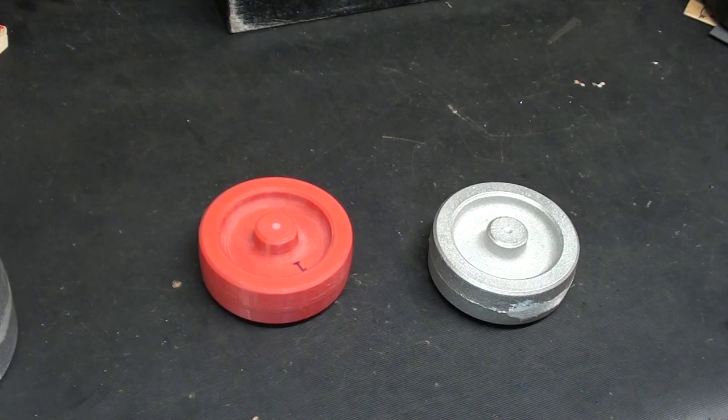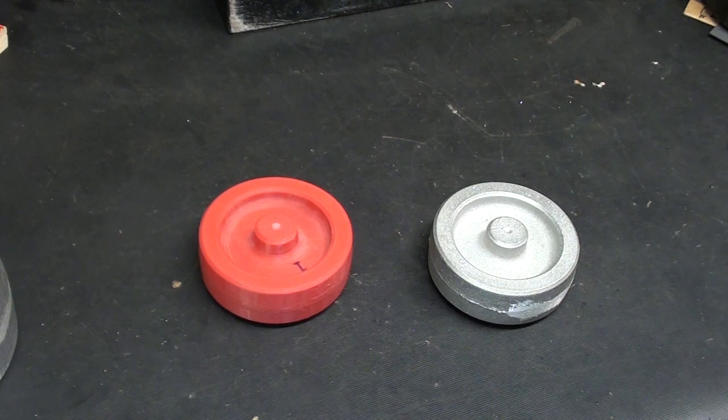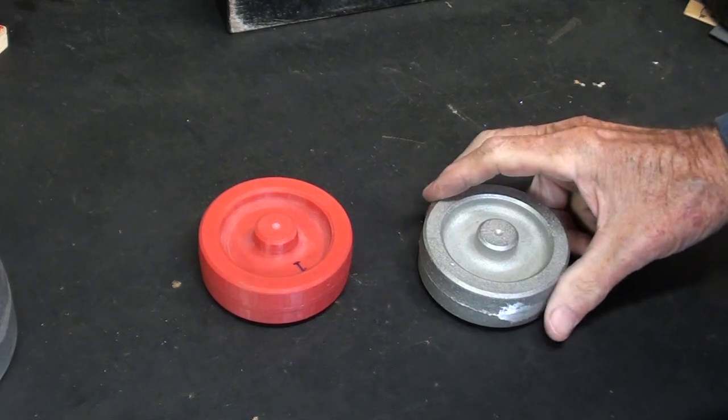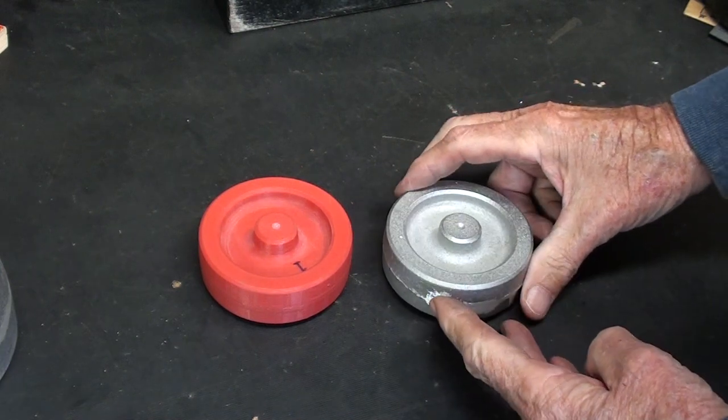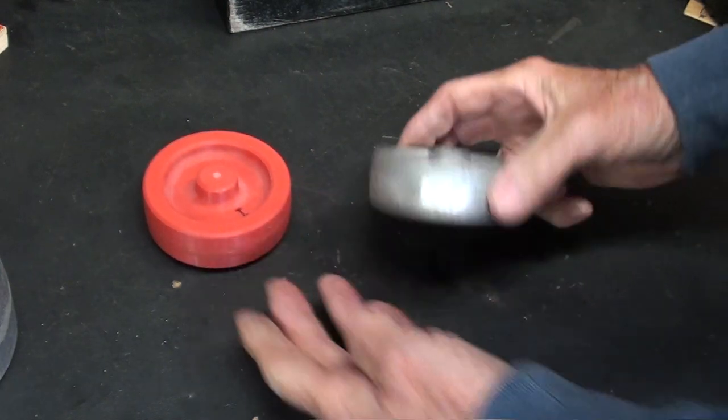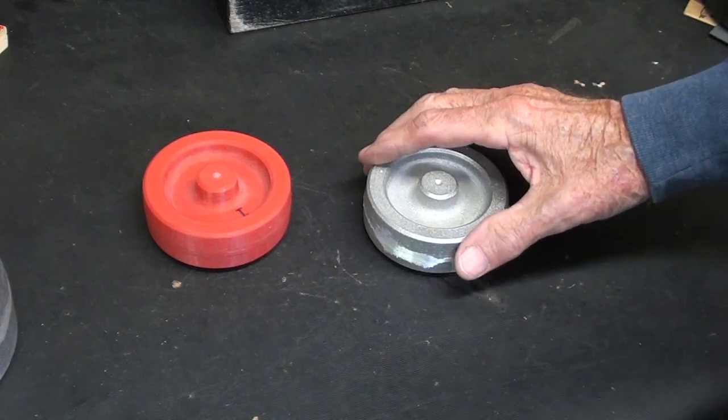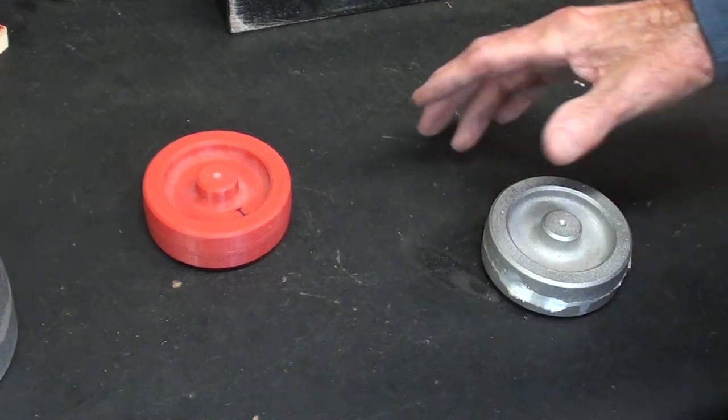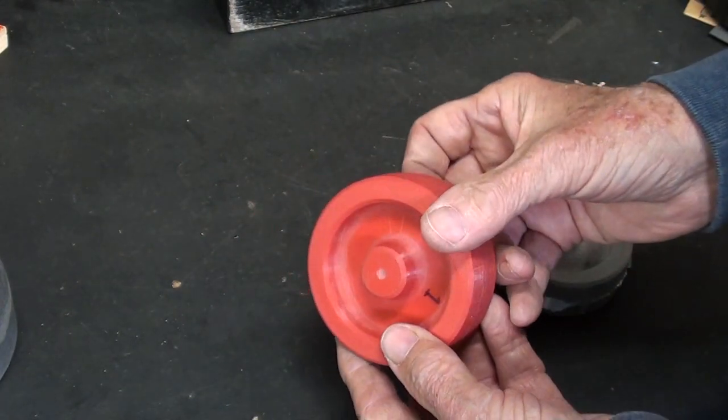I probably shouldn't confuse you by talking about double shrinkage, but let me do that anyway, it will take a couple of minutes. Quite often, when they would cast something like this in a big foundry, they are going to make a match plate. And they have 6, 8, 10 or a dozen of these on one plate, so they can cast them all at the same time.